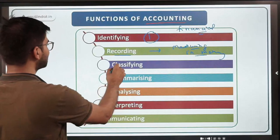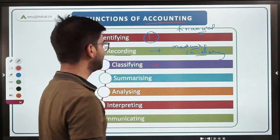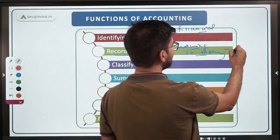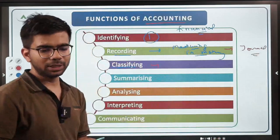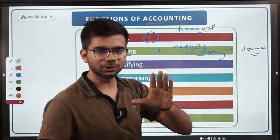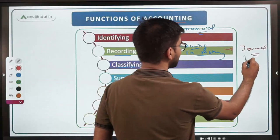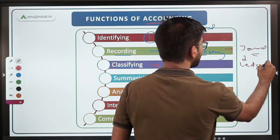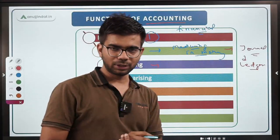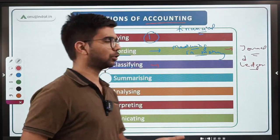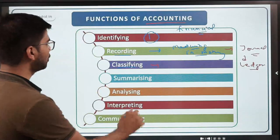After recording comes classifying. Classifying means that after measuring in money terms and recording in the journal — the journal is the basic book where all transactions are written — after the journal, classification means posting to the ledger. Whatever entries we have passed in the journal, we transfer them to the ledger. This is called classification.